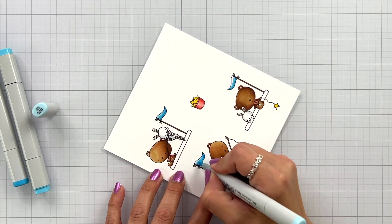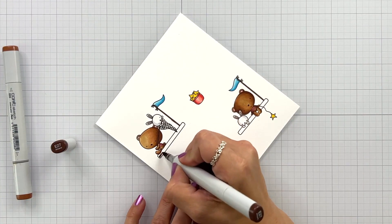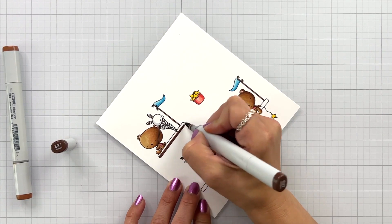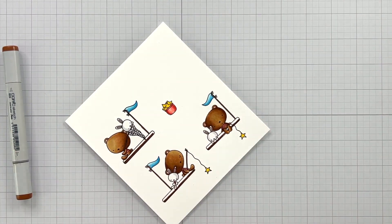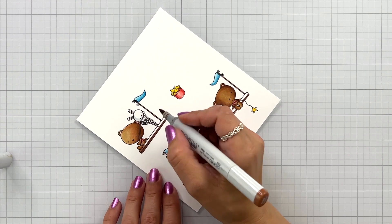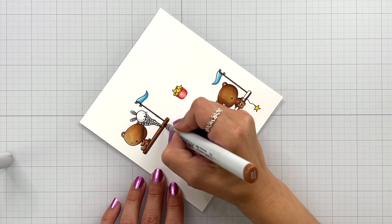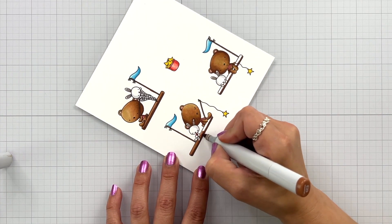And then for my flag I have B04, 02 and 00. For the little bench that my bear is sitting on I am going to color that in with an E27 just adding a line at the very bottom and then I'll bring in E23. I really didn't blend too much together. I like that stark contrast look.